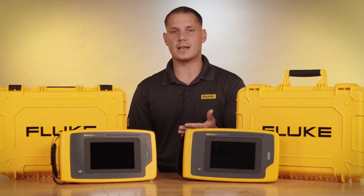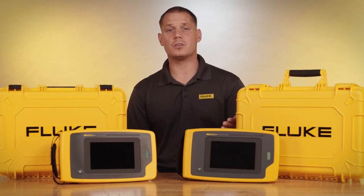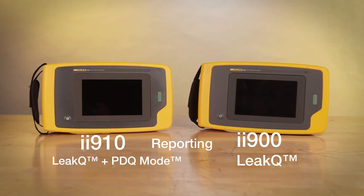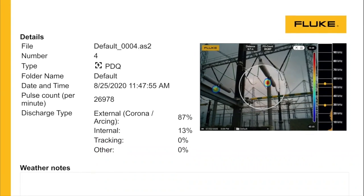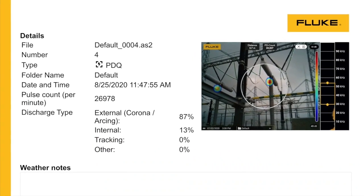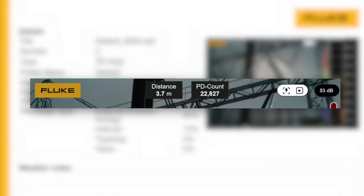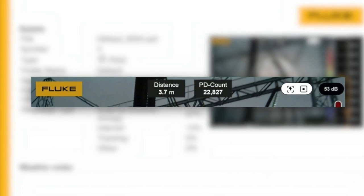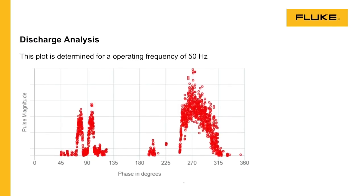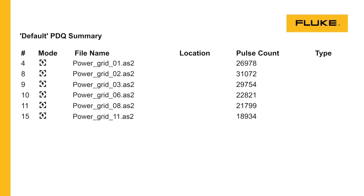Another difference on the ii910 is the reporting functionality. Like the ii900, the ii910 has leak queue mode, which indicates the severity of compressed air and gas leaks you find and provides you with a report detailing the estimated cost. But the ii910 also has what's called PDQ mode, which provides you with in-depth information about the partial discharge leaks that you find with the imager.